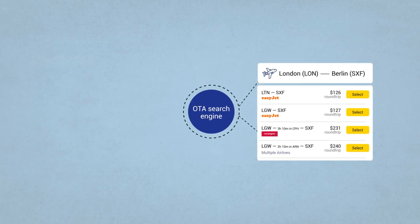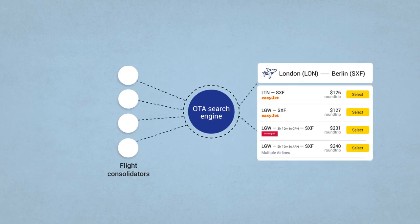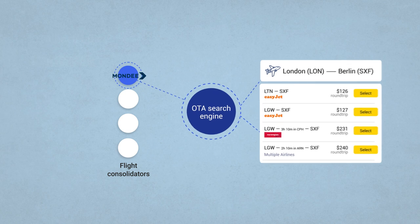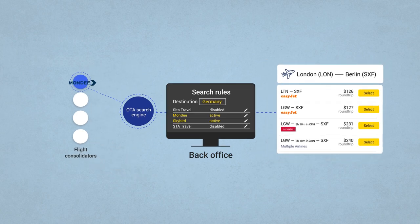For example, an OTA has contracts with several flight consolidators. And for the given city pair, best deals come from, say, Mondi or Skybird. The engine will look for these specific deals in those consolidators that have the best prices. To make it happen, the back office should have a search rules interface. And travel product managers use it. They define which suppliers you should reach to fetch results for specific origin, destination and some other factors.